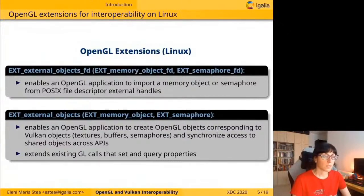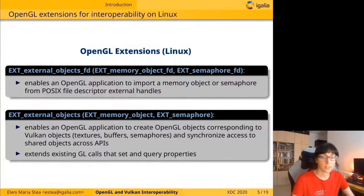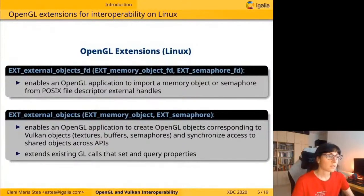The OpenGL interoperability extensions are grouped in two main categories. The first one contains the XMemoryObjectFD and XSemaphoreFD extensions, which enable OpenGL applications to import memory objects or semaphores from POSIX file descriptor external handles. The second one, the XExternalObjects category, contains extensions that enable OpenGL applications to create OpenGL objects corresponding to Vulkan ones, synchronize access to shared objects across APIs, and extends some existing GL calls that set and query properties with new properties.